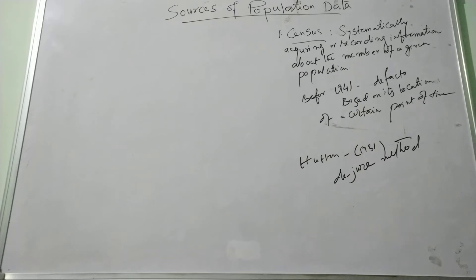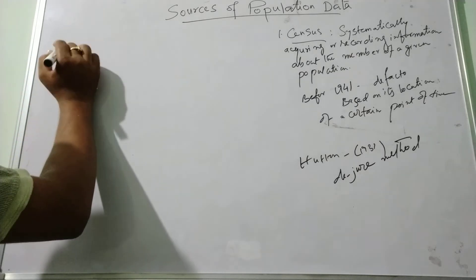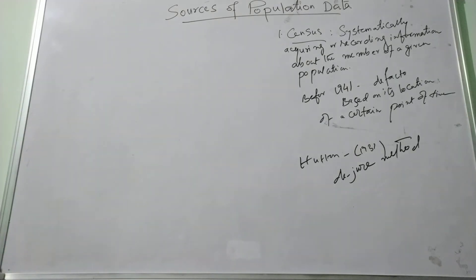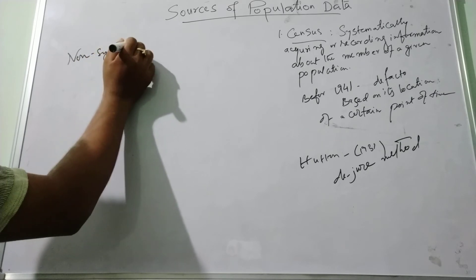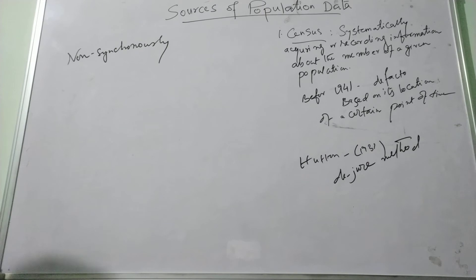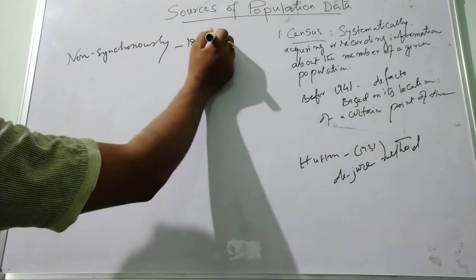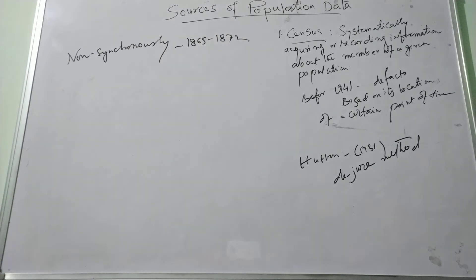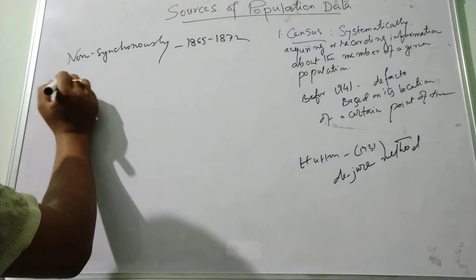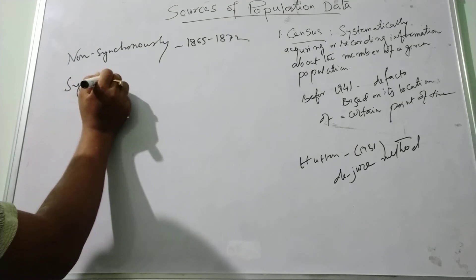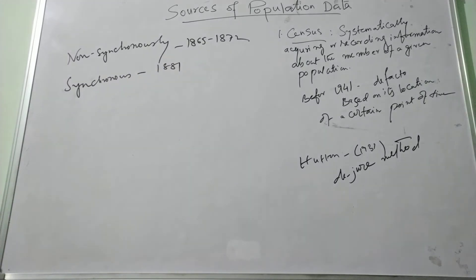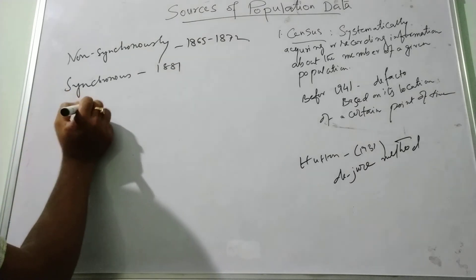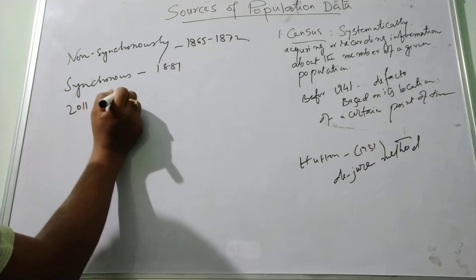And especially in India, it was synonymously started during 1865 to 1872. The first synchronous census was initiated in 1881 in India, and 2011 census was the 15th census of India.